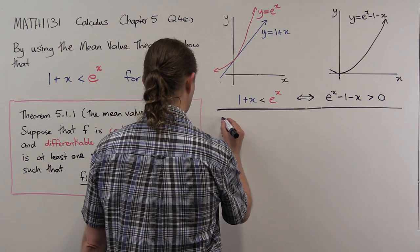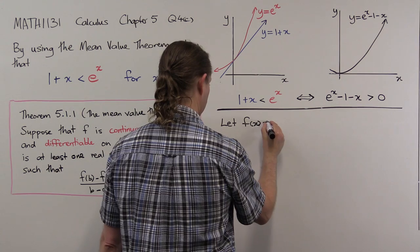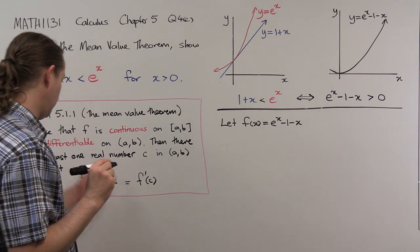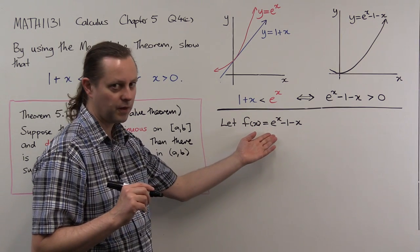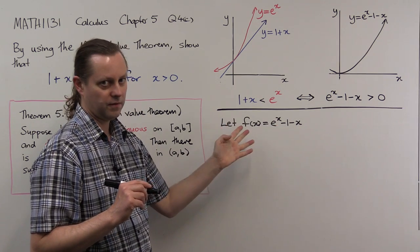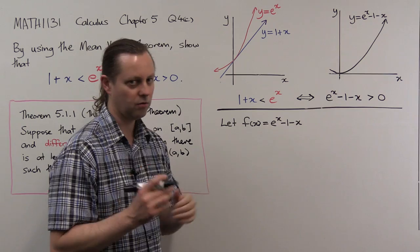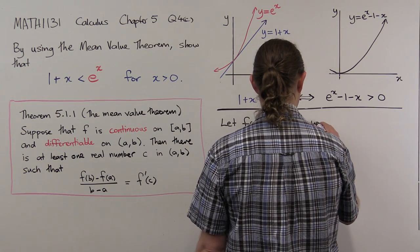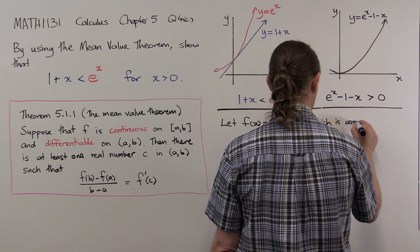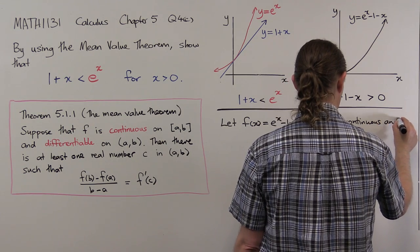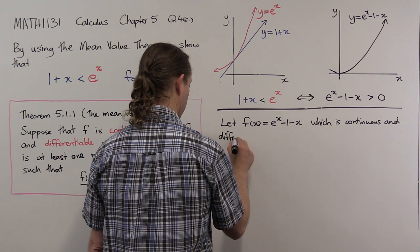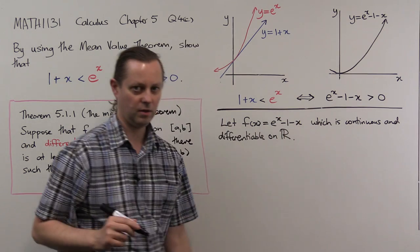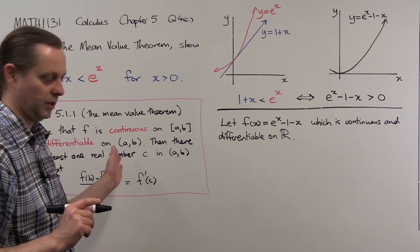So let's let f of x equal e to the x minus 1 minus x. We need to check this is differentiable and continuous. It's made up of the exponential function and a polynomial, and we know those functions are continuous and differentiable on the whole of the real line, so f will certainly be continuous and differentiable on any interval.